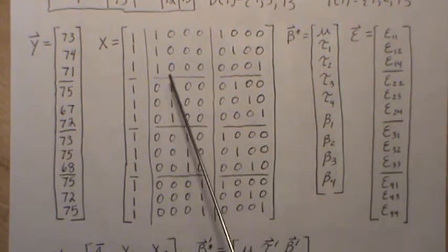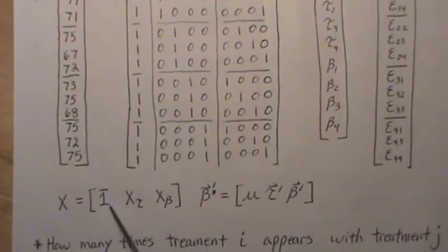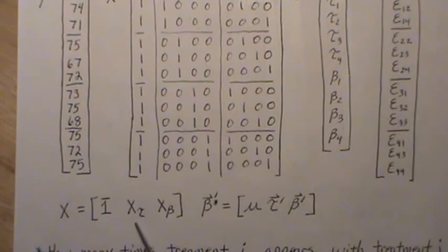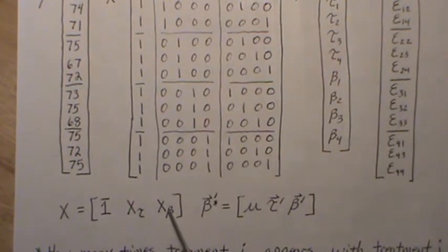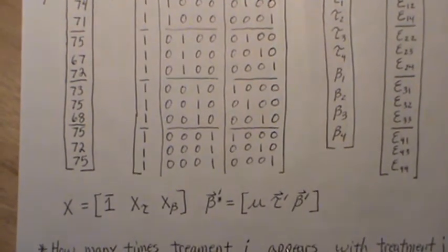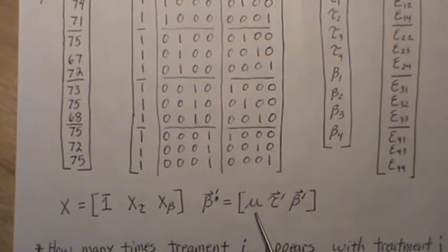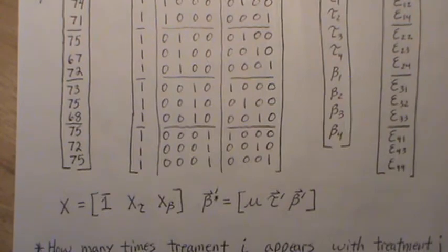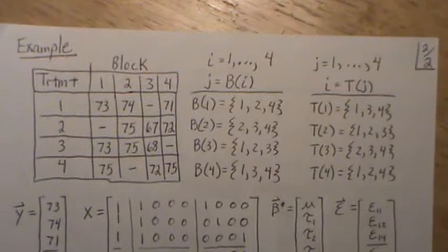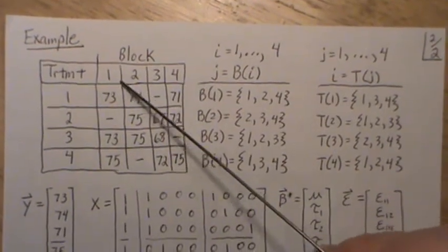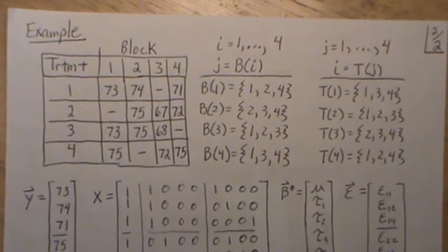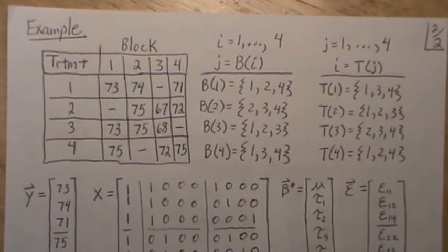The column space of X can be broken up into the column of ones, X_tau, and X_beta, associated with the treatment effects and the block effects. The beta vector can be partitioned into three components: mu, tau, and beta. These are vectors.